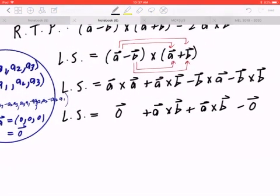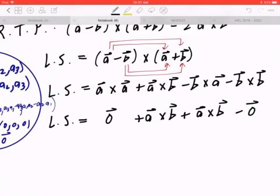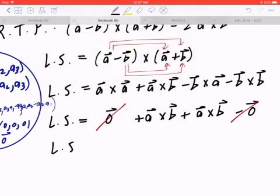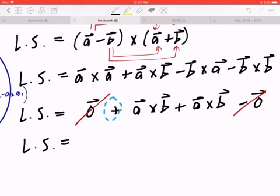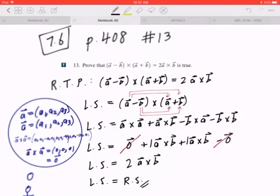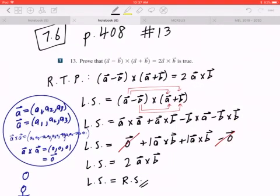Now back to the problem. Since you know that there's zero minus zero, you can cross that out. And just to be clear, when you think about a cross b plus a cross b, it's understood that there's a 1 in front of this. So 1 plus 1, that's going to give you 2. So 2 times a cross b, which is exactly what you're looking for from the right hand side. I hope this makes sense.